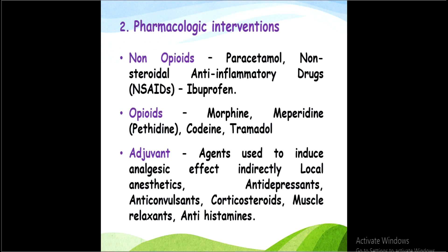The third pharmacological category is adjuvant therapy. Its effect is indirect on pain. Examples include local anesthetics, antidepressants, anticonvulsants, corticosteroids, muscle relaxants, and antihistamines. All these medications indirectly affect the level of pain.